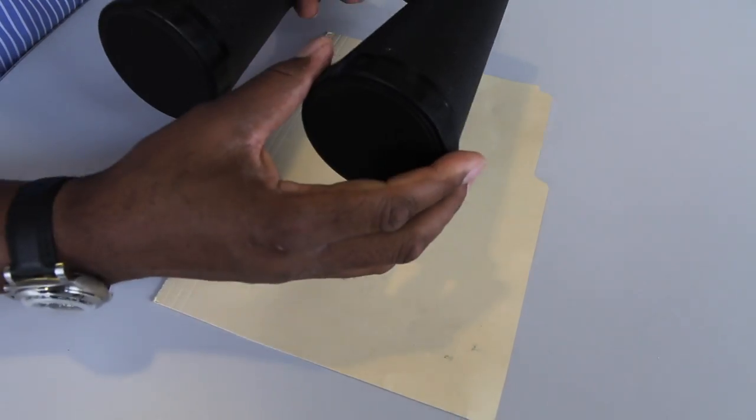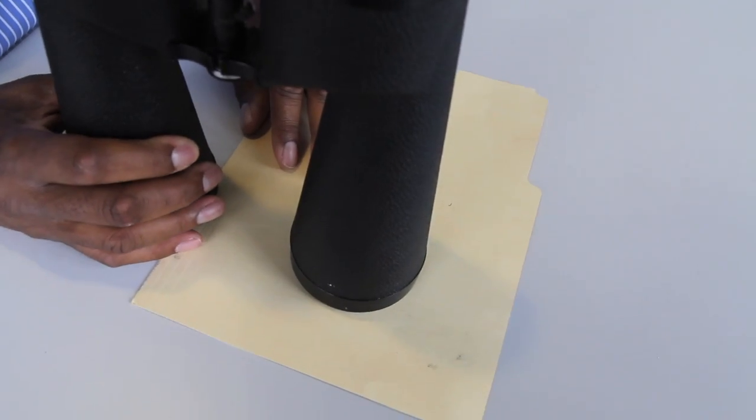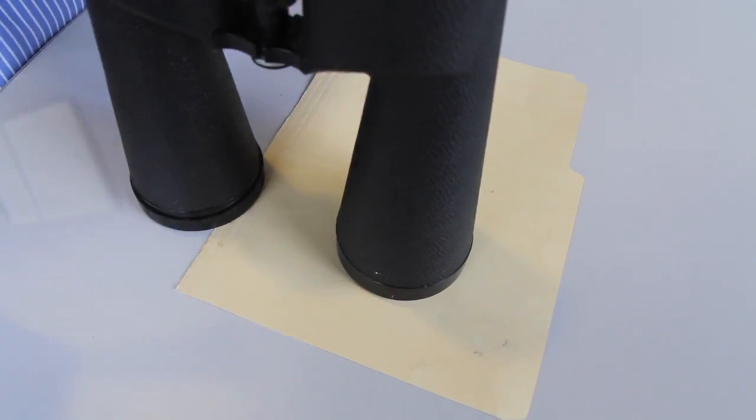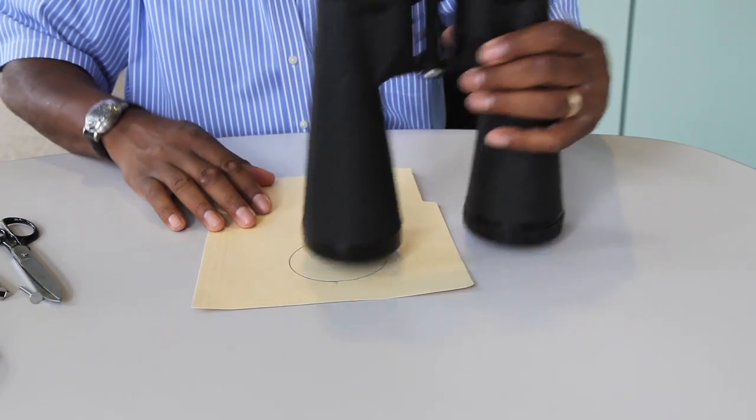First thing we'll do is we'll draw an outline of the exterior of the ocular. We'll just place it right down onto the folder, and we'll simply sketch out the size of the ocular, like so.